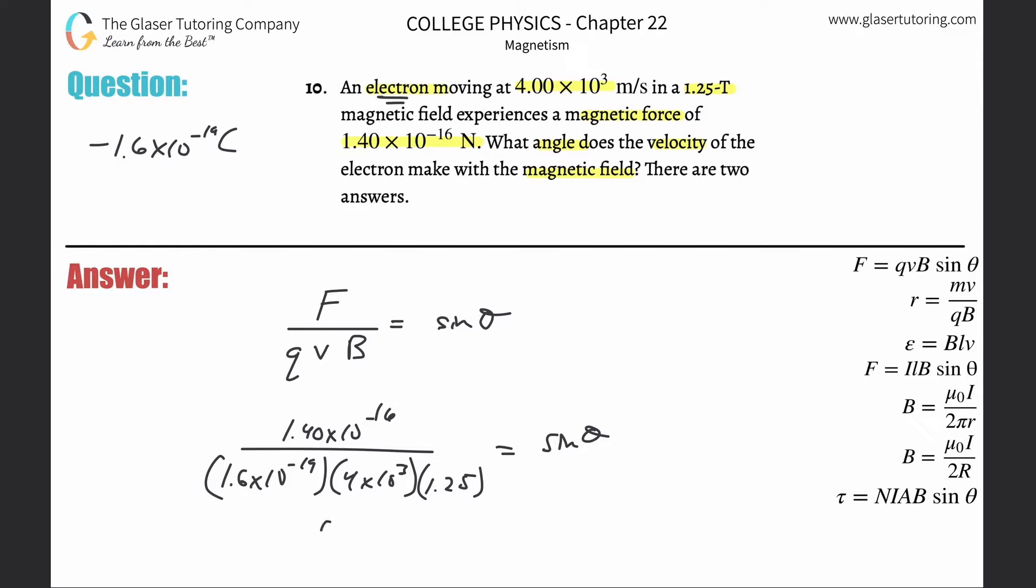So 1.4 × 10⁻¹⁶ divided by 1.6 × 10⁻¹⁹ × 4 × 10³ × 1.25. I get an answer here of 0.175 equals sine of theta. So the way we now have to solve for the angle is we have to find just theta, not sine of theta.